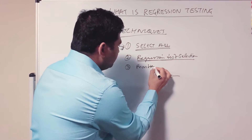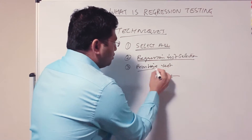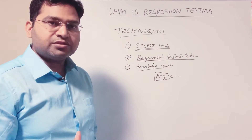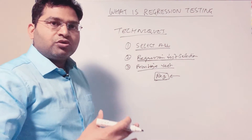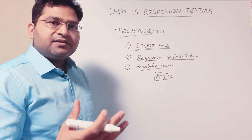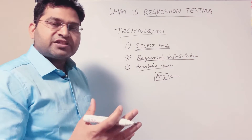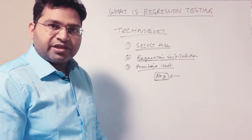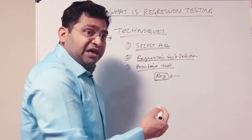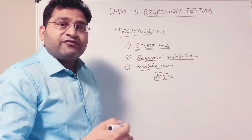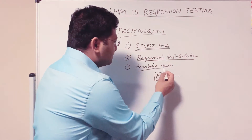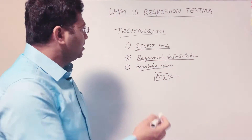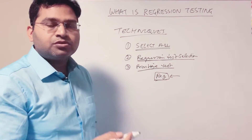The third approach is to prioritize test cases. You prioritize the critical test cases of your application. When the application is already in production and major or critical functionality is being used every day, those test cases will be prioritized. In case of any functional changes or defect fixes, those prioritized test cases will be executed as part of regression testing.